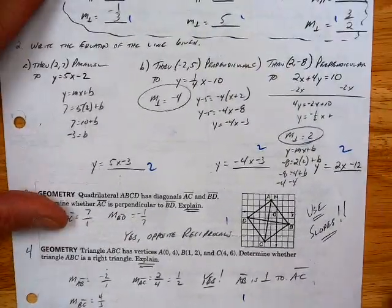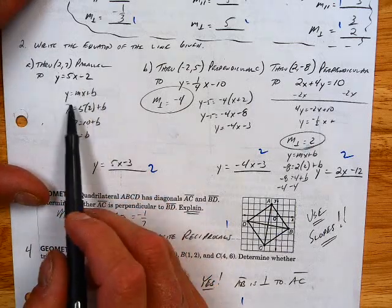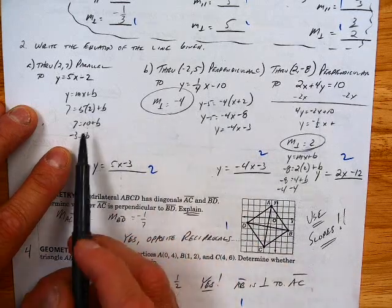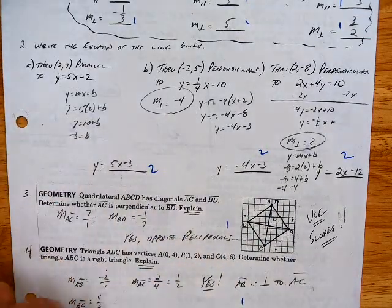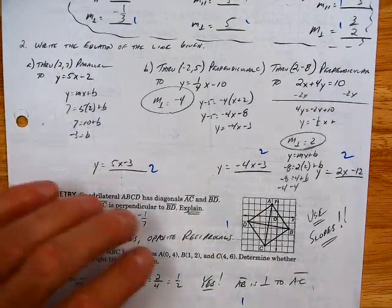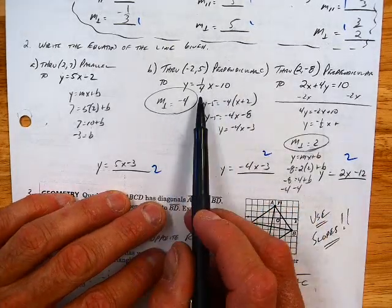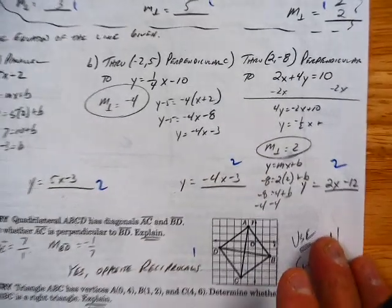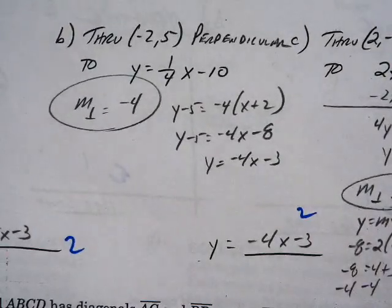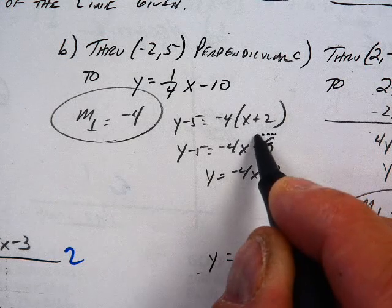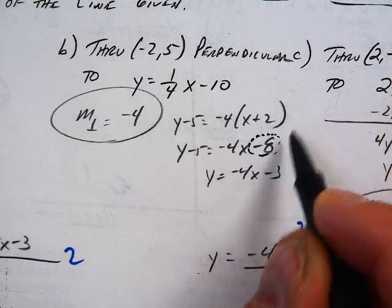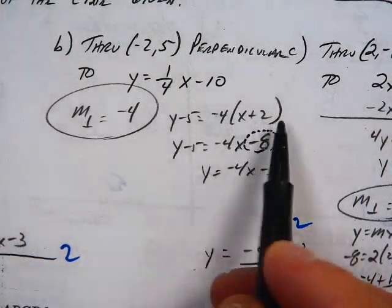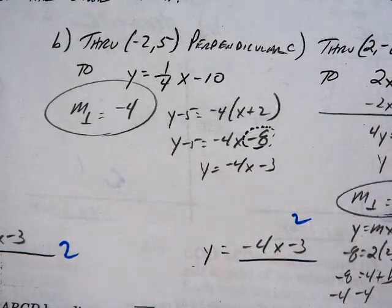Number two — now things start to get a little more challenging. Go ahead and use y equals mx plus b, or use your point-slope form. I find that I get 5x minus 3. This one is perpendicular, so the slope is 1 fourth, so now I'm going to use negative 4, and then just crank it out. The most common mistake was right here — people didn't write the first step, went right to the second step, and made a mistake. They had plus 8 instead of minus. So make sure you write that first step and carry it through.